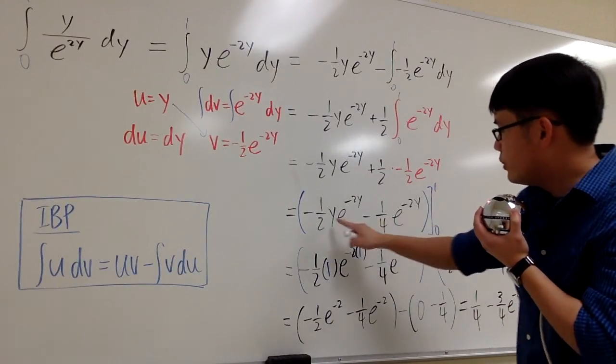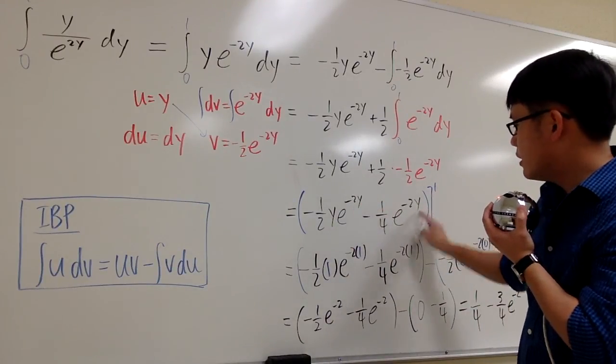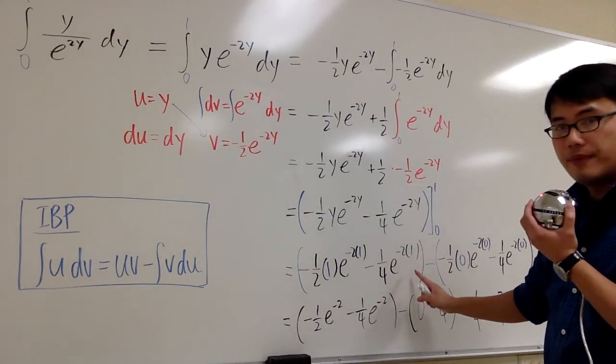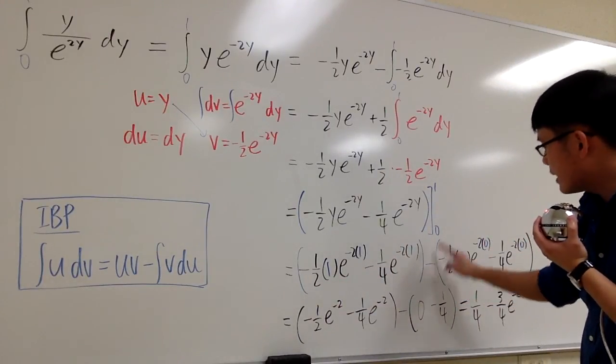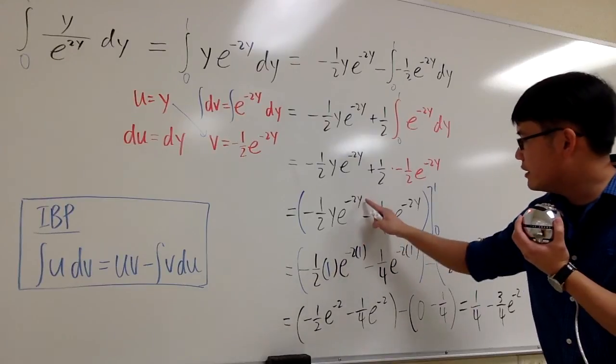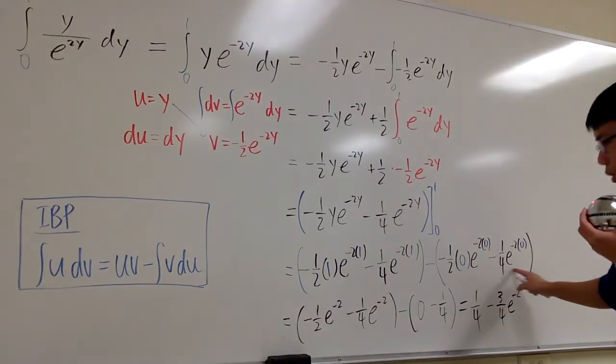Plug in 1 into the y here, y here, and the y here, and this is what we have. And then, we will subtract, plug in 0 into this y, this y, and that y, and this is what we have.